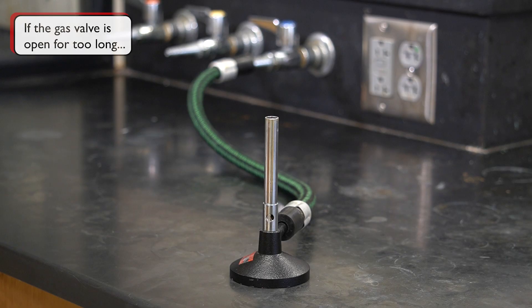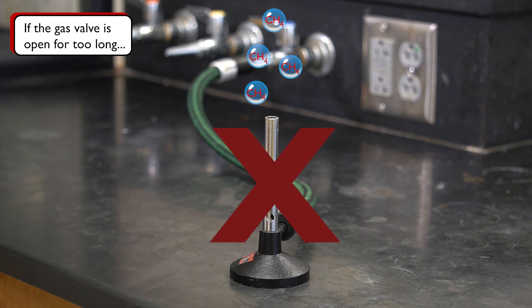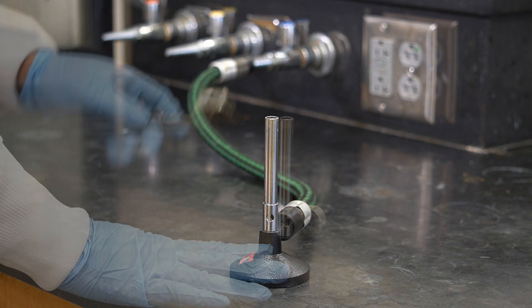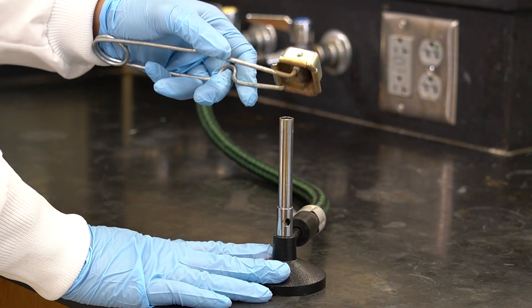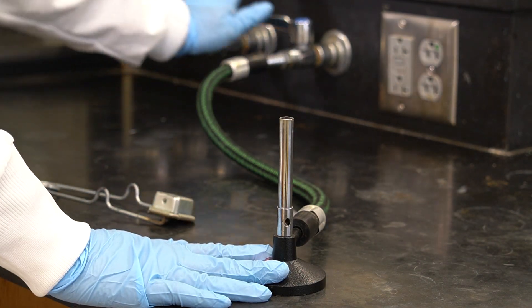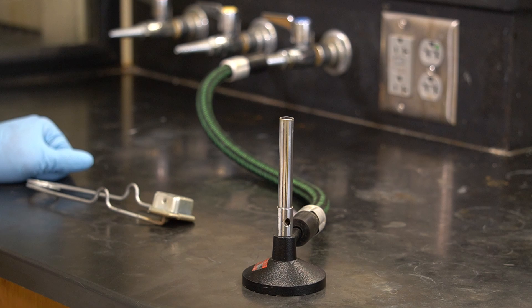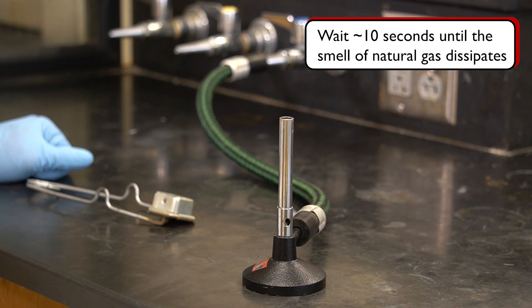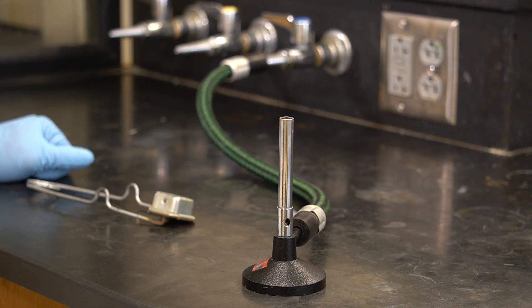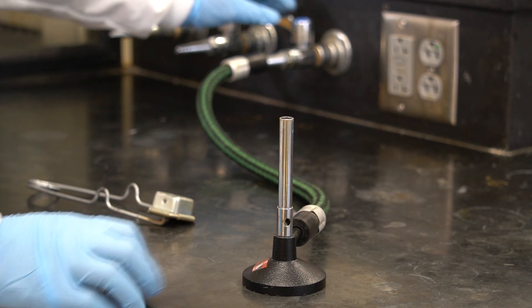It is very important that we do not leave the natural gas flowing for too long without a flame. We do not want to cause a natural gas leak in the building. If you are unable to spark a flame after a few tries, turn off the natural gas nozzle and wait a few seconds until the smell of natural gas dissipates. Now, adjust our burner and try again.